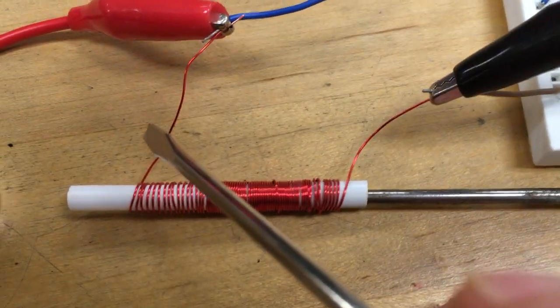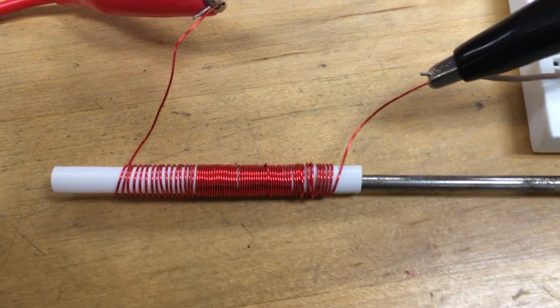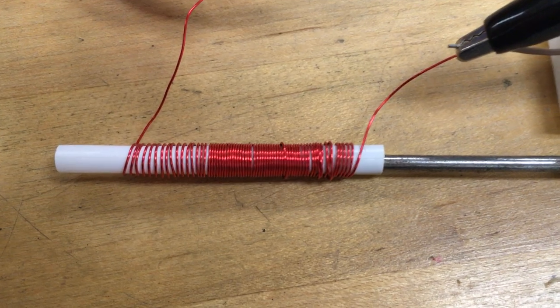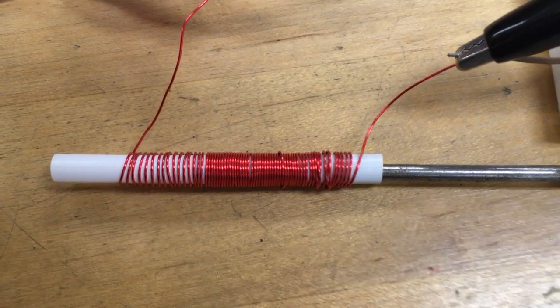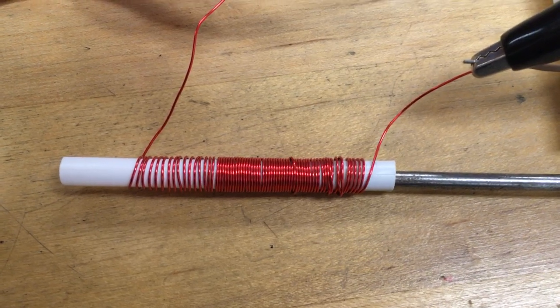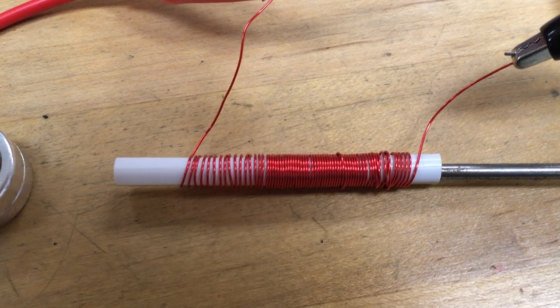So what that tells us with the right-hand rule is that since the current is going up the page in that wire that we can see on the top of the straw there, then the magnetic field created by this thing on the interior of the coil, remember that's where it's reinforced, is going to be to the left.